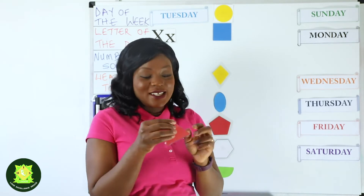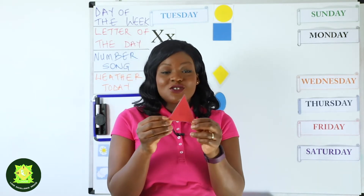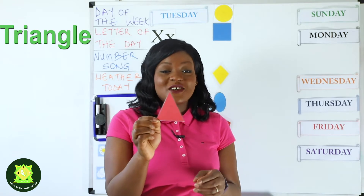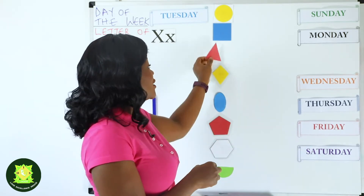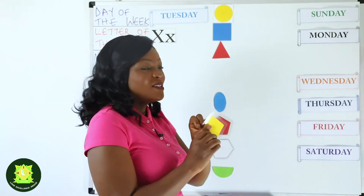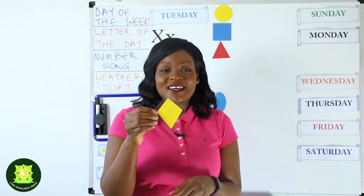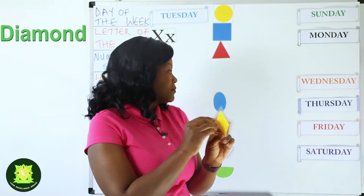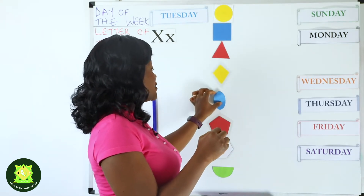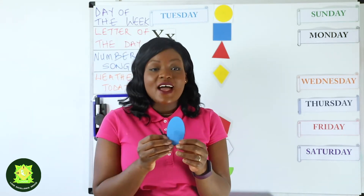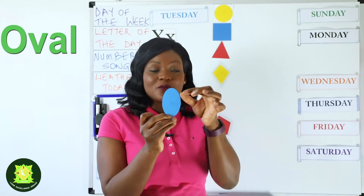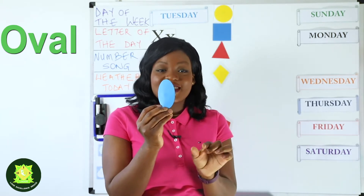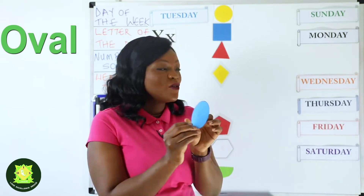Now this is a triangle. Good job if you said triangle. Let's go to the next one. This is a diamond. Now next we have an oval. Can you see how long it is? So this is an oval.